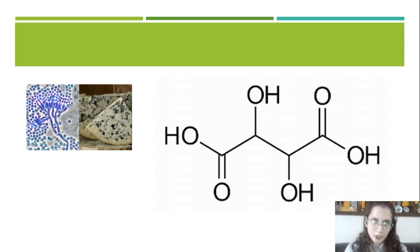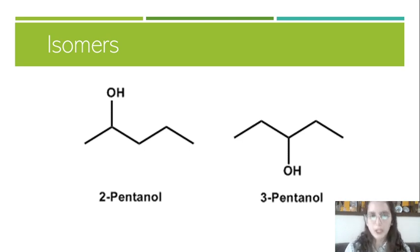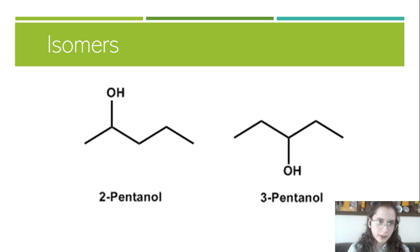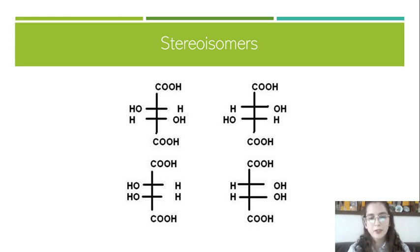To understand his work, we need some definitions first. Isomers are compounds that have the same molecular formula but different structures. For example, we can look at 2-pentanol and 3-pentanol — we can count the carbons, hydrogens, and oxygens in each structure and see that they are the same, although they are not connected in the same way. A type of isomers are stereoisomers, which are isomers that have their atoms connected in the same order but have a different three-dimensional arrangement.